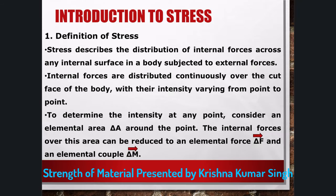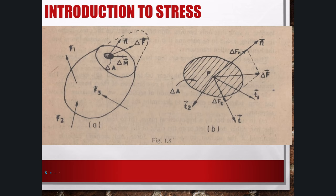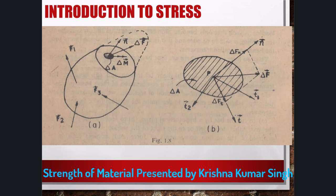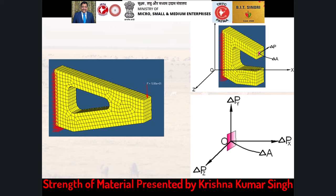We have seen that tractions exist across every internal surface element of a body subjected to external forces. The concept of stress helps us to investigate the nature of the distribution of the internal forces over any internal surface. Figure 1.8a shows such an arbitrary internal surface exposed by removing a part of the body. Internal forces are assumed to be continuously distributed over this cut face A, and we wish to know the intensity of these forces at any point P on the face. For this, we consider an elemental area delta-A surrounding point P, where delta-A is very small compared to the area of section A but large enough with respect to the intermolecular spacing.